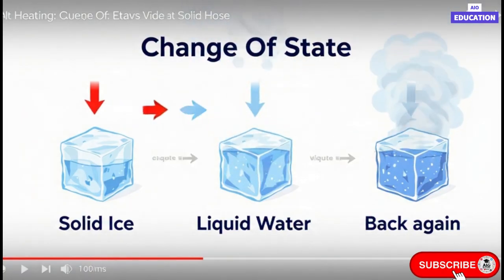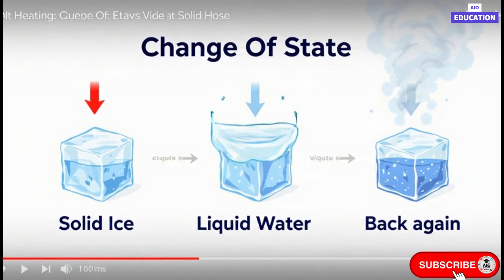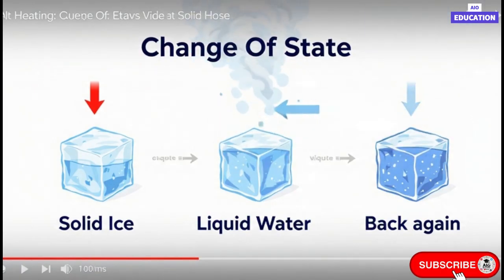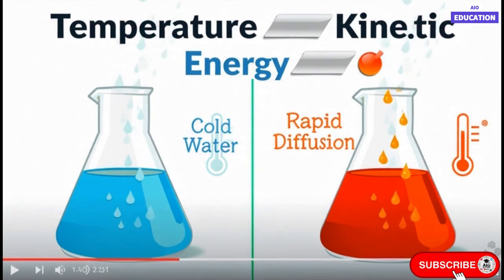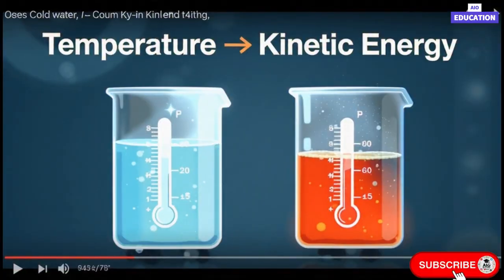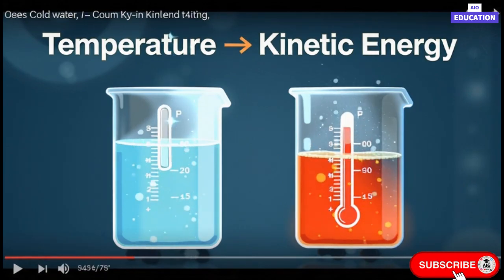Moving on to gases. Gases have neither a fixed shape nor a fixed volume. The particles in gases are very far apart, and the inter-particle attraction is almost negligible. The particles move randomly and at very high speeds in all directions. Because of this continuous motion, gases can spread or diffuse easily and fill the entire space of the container they are kept in.